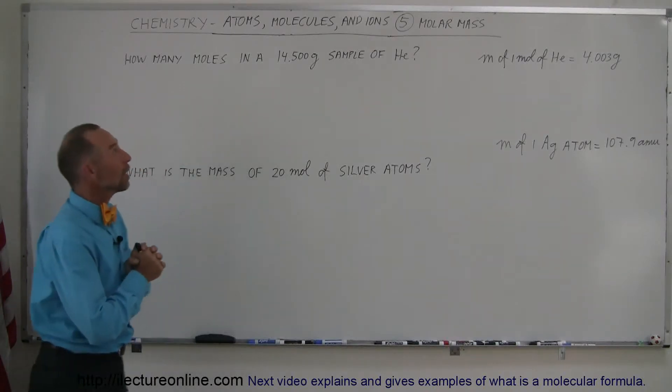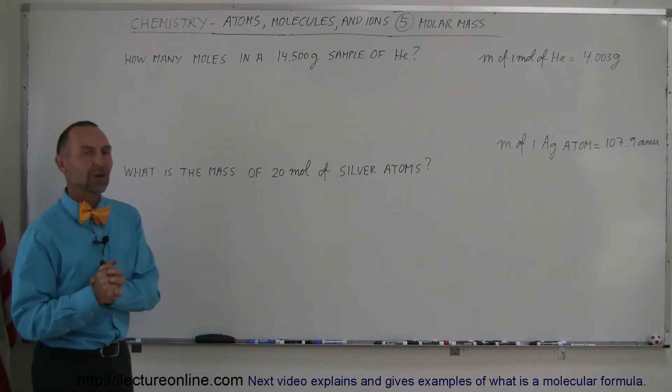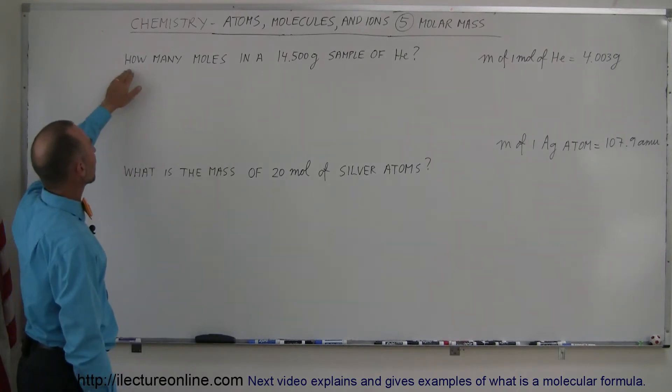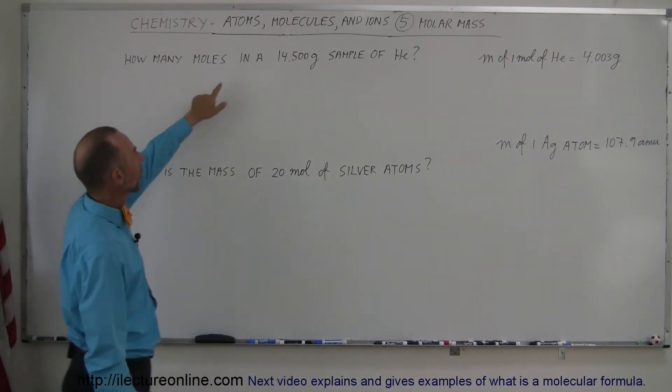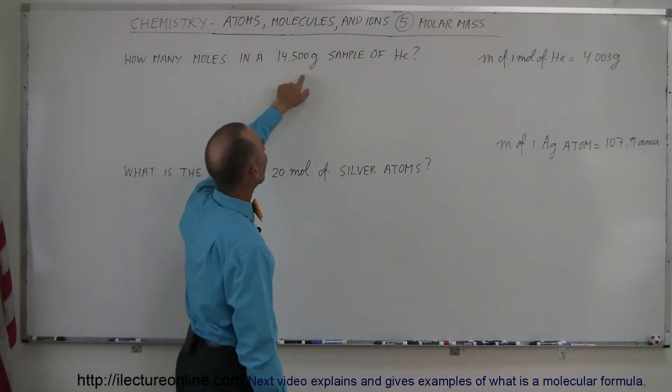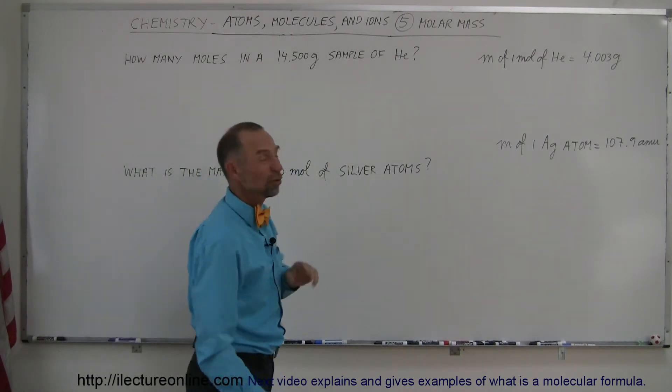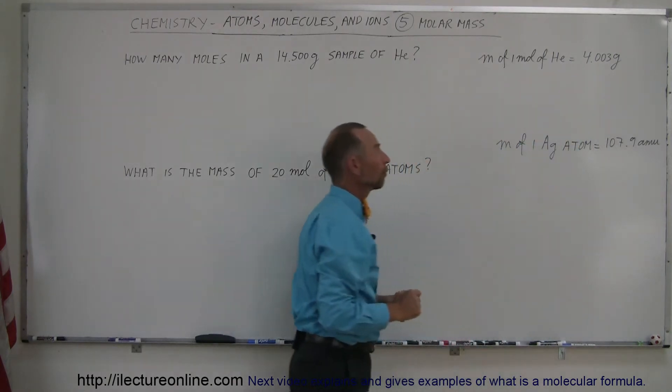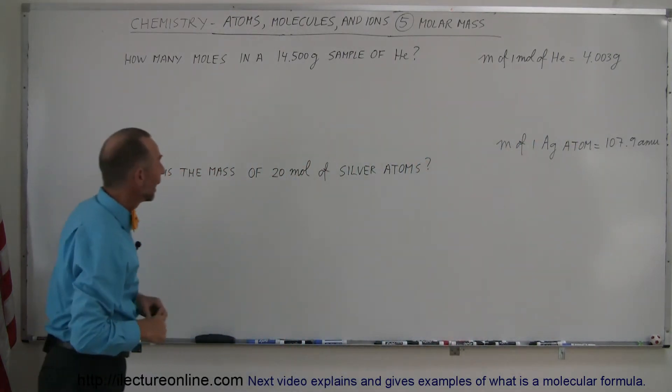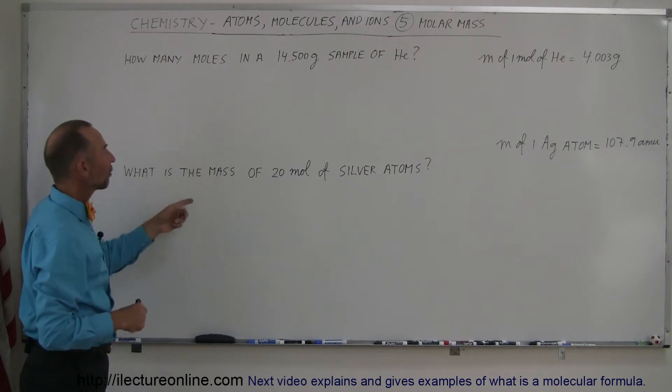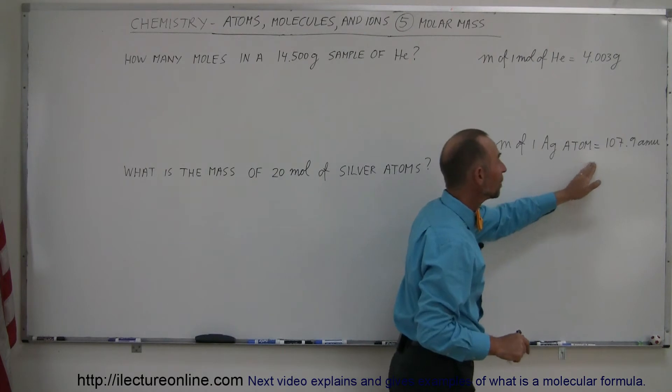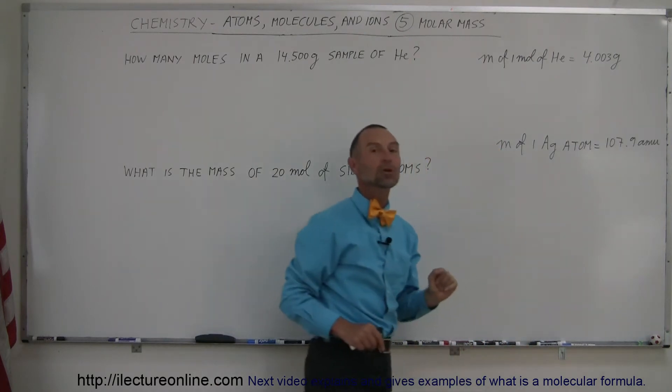To get a better understanding of what a molar mass is, I wanted to give you a couple examples. Here we are asking how many moles are there in a 14.5 gram sample of helium, knowing that the mass of one mole of helium is 4.003 grams. And here they're asking what is the mass of 20 moles of silver atoms, knowing that the mass of a single silver atom is 107.9 AMUs.